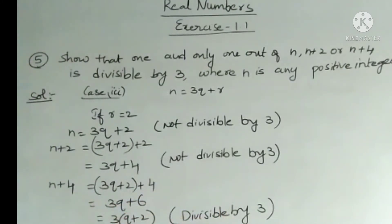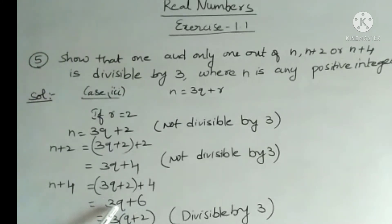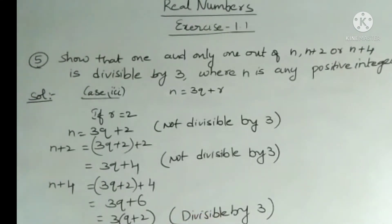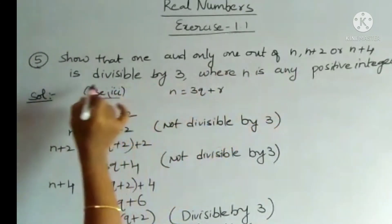And n + 4 = (3q + 2) + 4 = 3q + 6 = 3(q + 2), so taking 3 as common, it is clearly divisible by 3. Out of n, n+2, and n+4, only n + 4 is divisible by 3. Therefore, we conclude that only one out of n, n+2, or n+4 is divisible by 3. Thank you for watching.